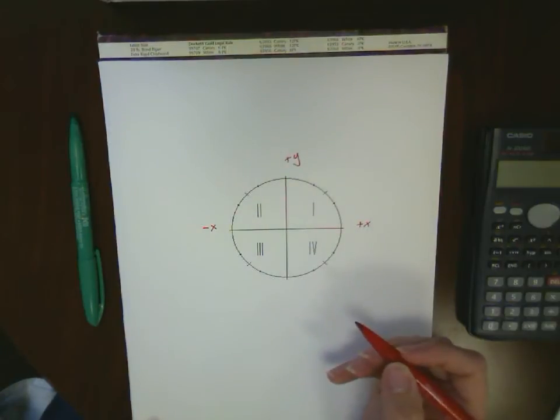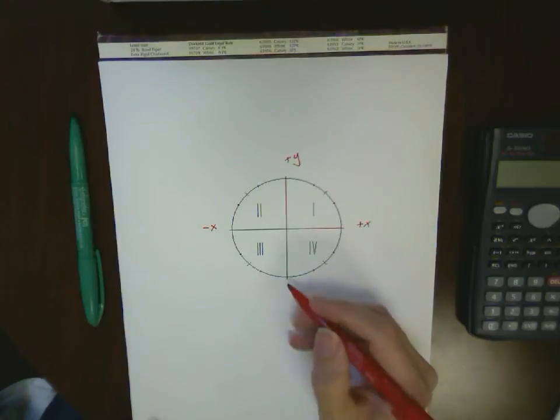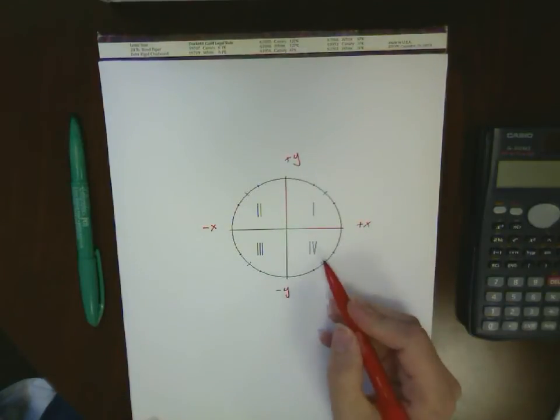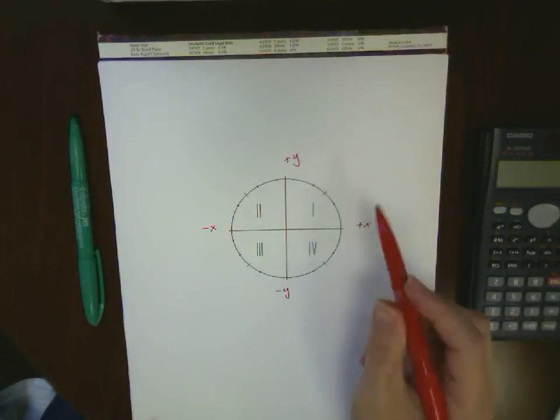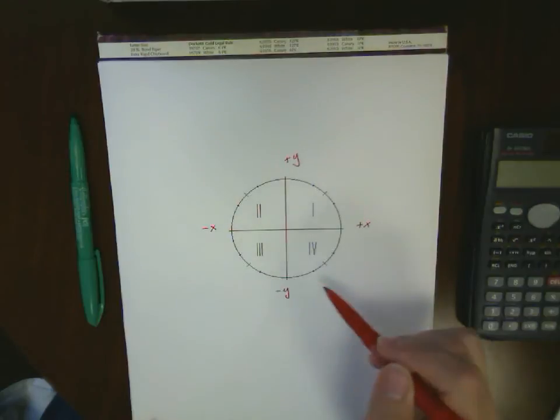The third quadrant is from the negative x-axis to the negative y-axis, and the fourth quadrant is from the negative y-axis back up to the positive x-axis. Notice we use counterclockwise as our direction here. That's the standard when we're working with polar coordinates.